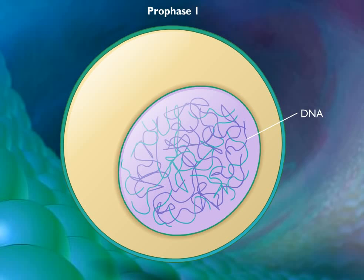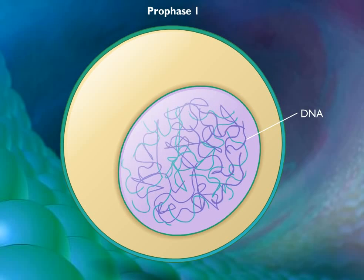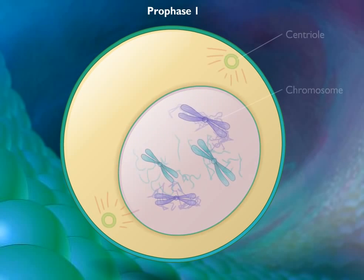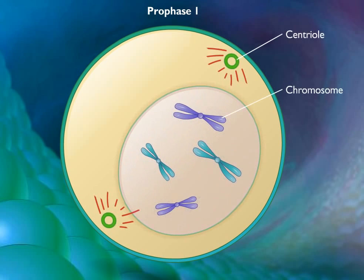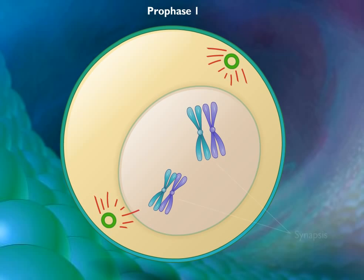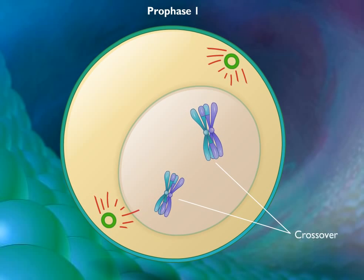In prophase I, the DNA coils tightly and individual chromosomes become visible under the light microscope. Homologous chromosomes become closely associated in synapsis and they exchange segments by crossing over.